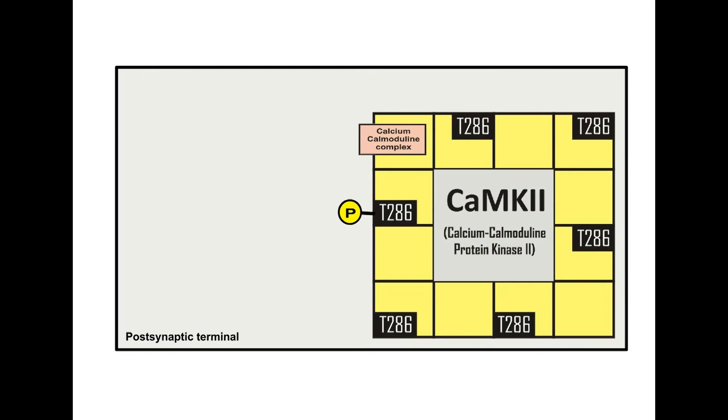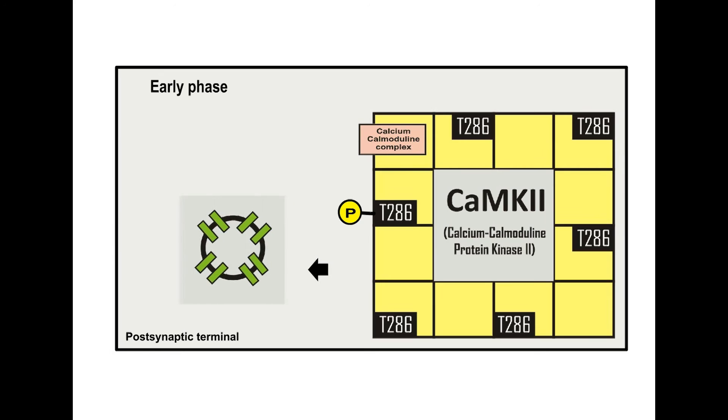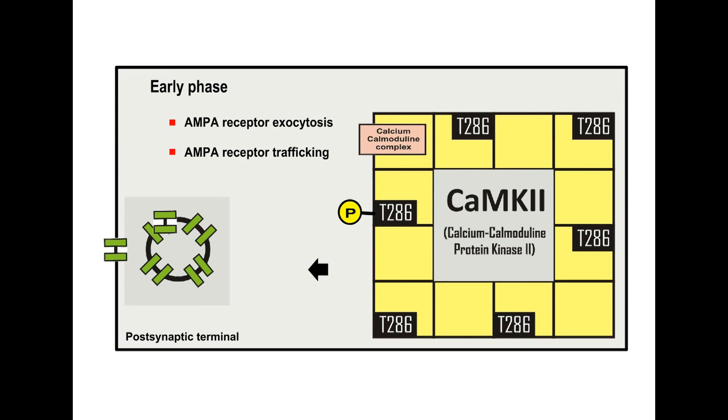Activated calcium-calmodulin protein kinase 2 triggers early phase and late phase events. In early phase events, calcium-calmodulin protein kinase 2 phosphorylates GLU-A1 subunit on AMPA receptors so that it stabilizes AMPA receptors to the postsynaptic membrane. It also increases channel conduction of AMPA receptors and induces AMPA receptor exocytosis and trafficking to the postsynaptic membrane. These early phase events are required for short and intermediate term memory.